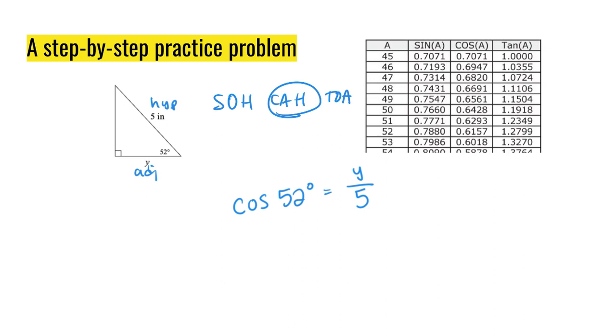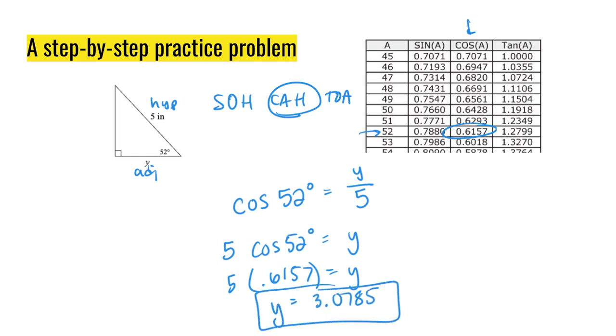You're now ready to try and solve this equation. We have 5 times the cosine of 52 degrees is what isolates our variable for us. We're ready to substitute that value out, 52 and the cosine. I get 0.6157. And lastly, using my calculator, I get y equals 3.0785. And I'm done.